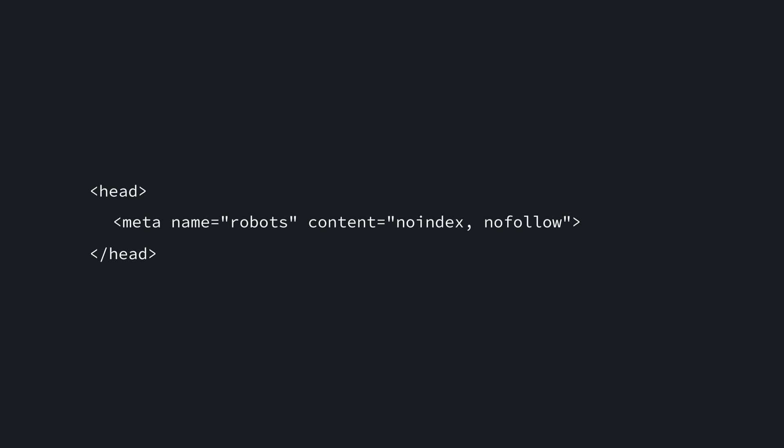The last meta tag I want to mention is the robots meta tag. This tag is often used to keep search engines from indexing documents, internal search results, duplicate pages, staging areas, and whatever else you don't want to show up in search.